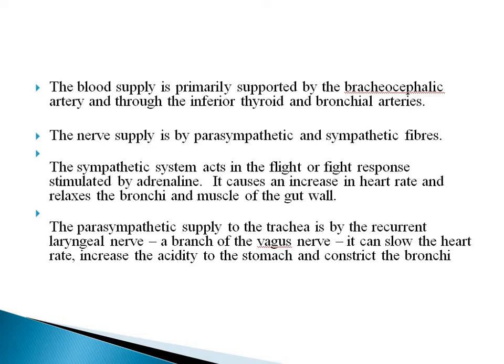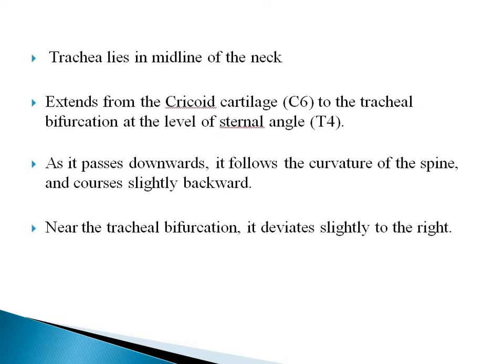The sympathetic system acts in the fight-or-flight response, stimulated by adrenaline. Its effect on the trachea is to relax the bronchia and the muscles of the gut wall, and increase the heart rate. The parasympathetic supply to the trachea is via the recurrent laryngeal nerve, a branch of the vagus nerve. It slows heart rate, increases acidity in the stomach, and constricts the bronchia. So relaxation is by the sympathetic and constriction is by the parasympathetic.